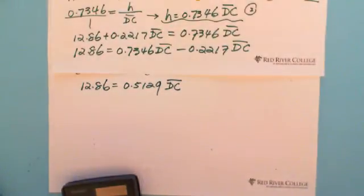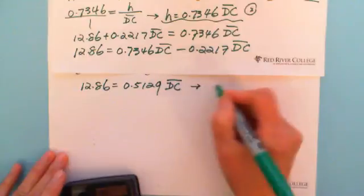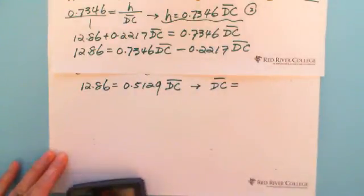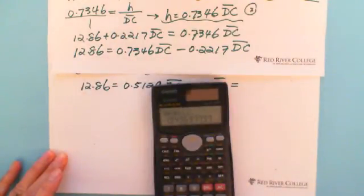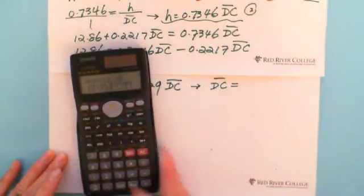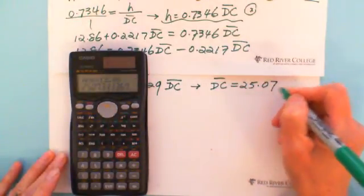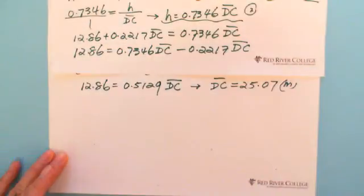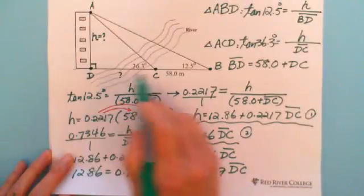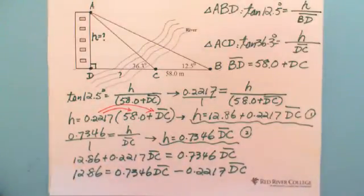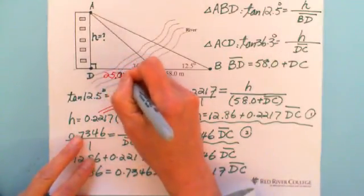We can just divide 0.5129 to the other side. We have DC equals 12.86 divided by 0.5129, which equals 25.07 meters. The DC is 25.07 meters, which is this one. We got that one, we can label it on the picture. Finally we find it's 25.07 meters.